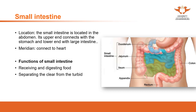If the small intestine is disordered, for example the function of receiving and digesting food doesn't work well, the small intestine cannot digest food properly. This condition causes undigested food in the stool - when the patient goes to the toilet they can see the food they ate the day before in the stool. In this condition we use treatments to tonify the spleen function.